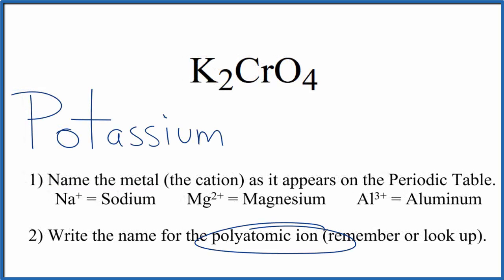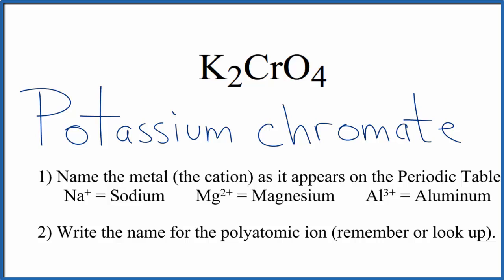Next, we write the name for the polyatomic ion, that's this CrO4. So you either remember, or if you're allowed, you look up that CrO4 is the chromate ion, lowercase c. And the name for K2CrO4 is potassium chromate.